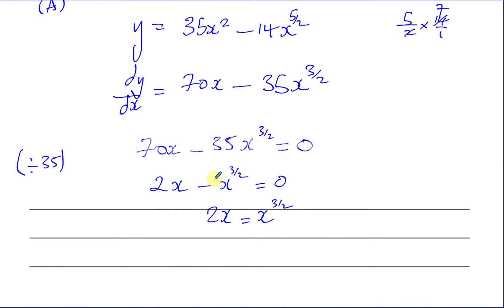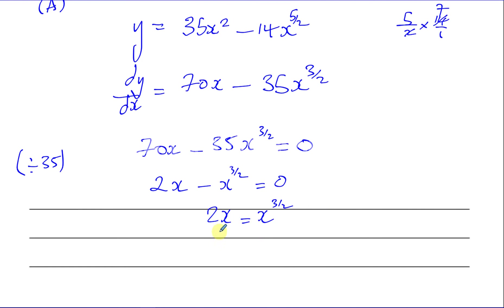If there were an additional term, you could let y equal x to the power of 1 half, so x to the power of 3 over 2 would be y cubed, and x would be y squared, and then carry on. But we don't need to do that here because we have a zero on one side — we can just do stuff to both sides with a single term on each side.